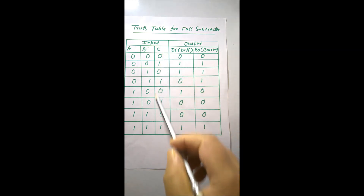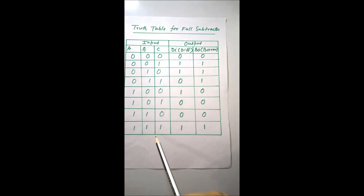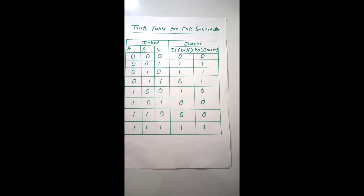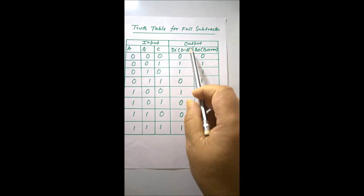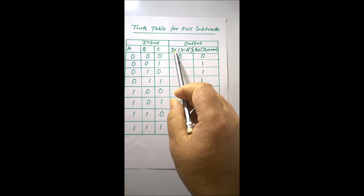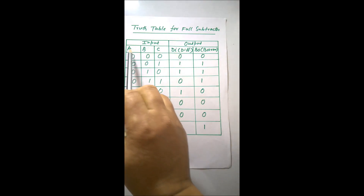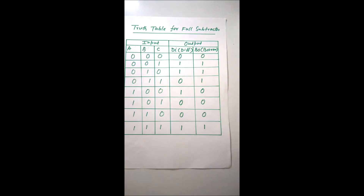Design and implementation of a full subtractor. This is the truth table for the full subtractor. A, B, C are the three inputs and the outputs are Difference and Borrow. We have to find the relationship of Difference in terms of A, B and C, and also Borrow in terms of A, B and C.